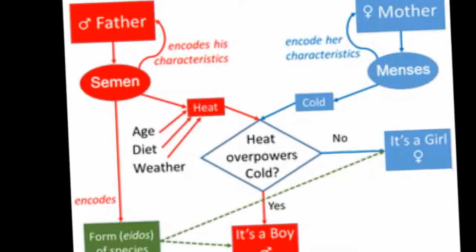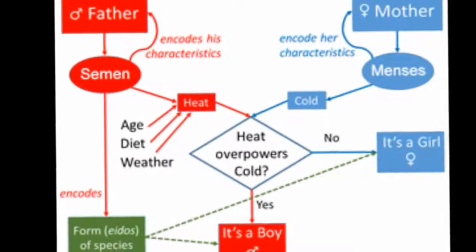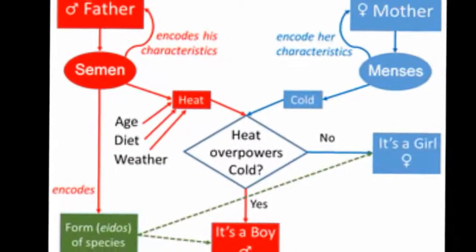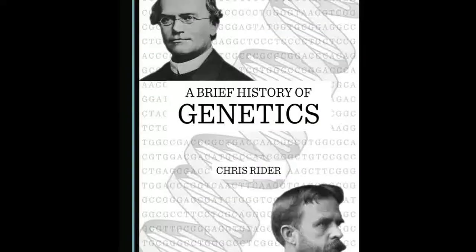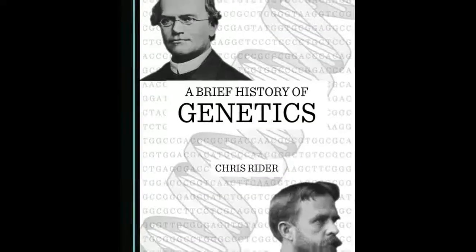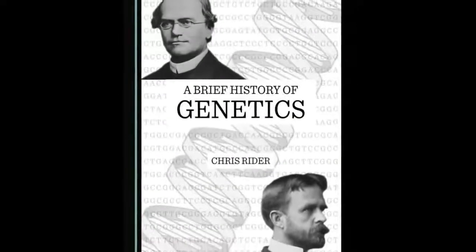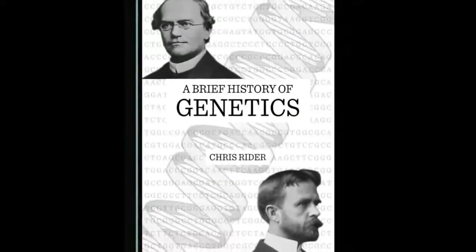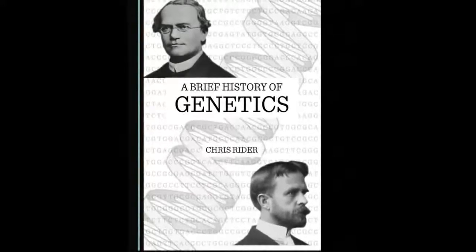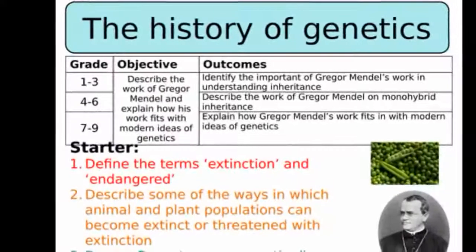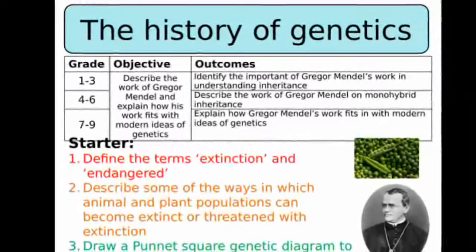The year 1900 marked the rediscovery of Mendel by Hugo de Vries, Karl Correns, and Eric von Tschermak, and by 1915 the basic principles of Mendelian genetics had been studied in a wide variety of organisms, most notably the fruit fly Drosophila melanogaster.